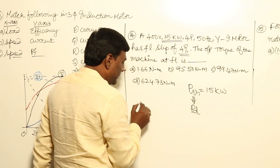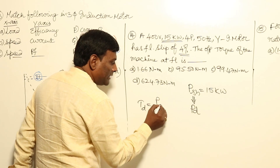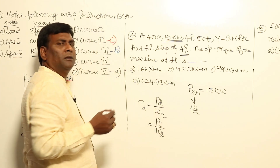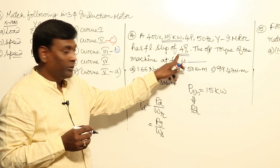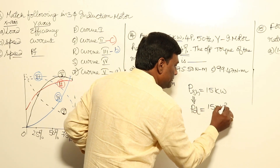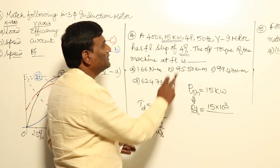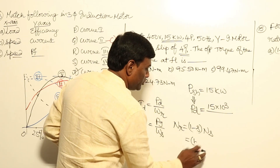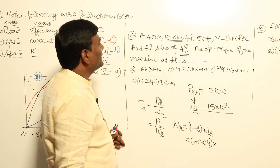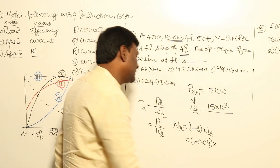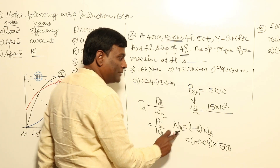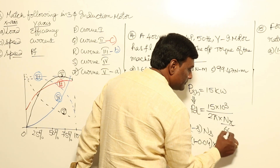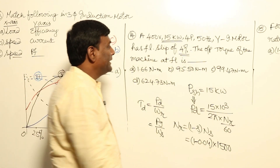Torque developed = Pd / ωr, where ωr = 2π × Nr / 60. Here Nr = (1 − s) × Ns = (1 − 0.04) × 1500 = 1440 rpm (since for 4-pole, 50 Hz: Ns = 1500 rpm). So ωr = 2π × 1440 / 60. Dividing 15,000 W by this angular velocity gives a torque of approximately 99.47 Newton-meters.